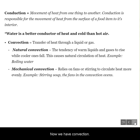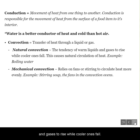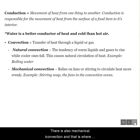Now we have convection, and two types. Natural convection is the tendency of warm liquids and gases to rise while cooler ones fall — boiling water is a good example of this. There's also mechanical convection, and that is where you're actually moving hot air or liquid manually.